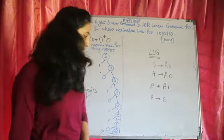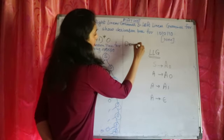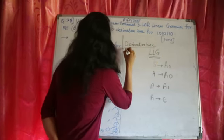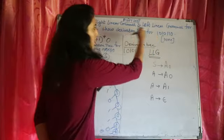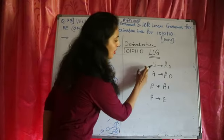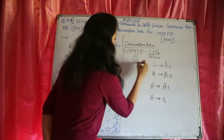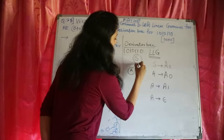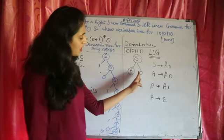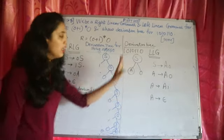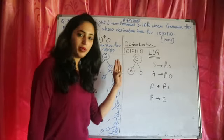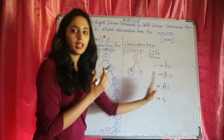Similarly, let us also see the derivation tree for the left linear grammar for the same string 1 0 1 0 1 1 0, because they have asked for the derivation tree for both grammars. Again, we start with the start state S. In the left linear grammar, it will always consider the ending, since the capital letter is always on the left. So progress goes from the left side — it starts with considering the last symbol.